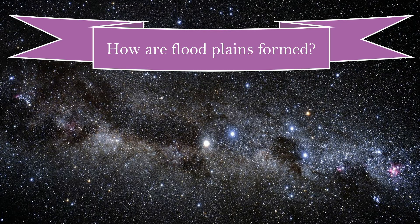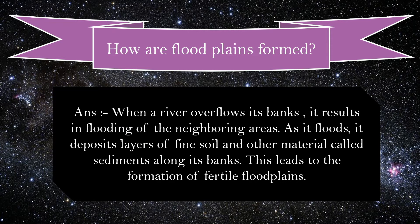How are floodplains formed? When a river overflows its banks, it results in flooding of the neighboring areas. As it floods, it deposits layers of fine soil and other material called sediments along its banks. This leads to the formation of fertile floodplains.